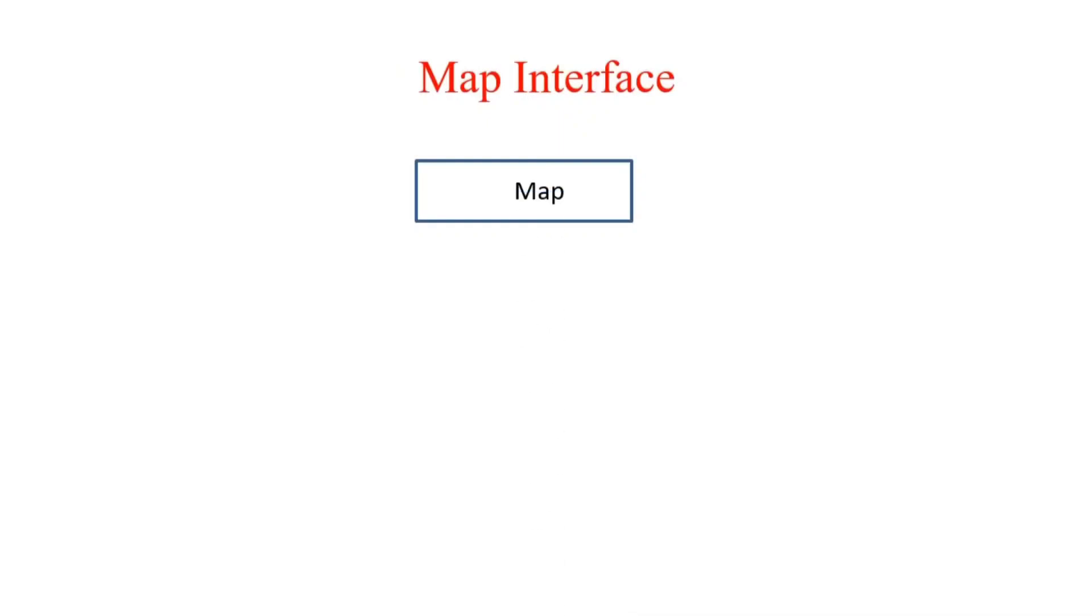The Map interface, remember, is the unique interface in the collection hierarchy. Why? Because it does not extend the Collection interface. Now let's see the hierarchy first, and then I will tell you why.